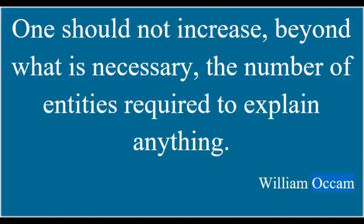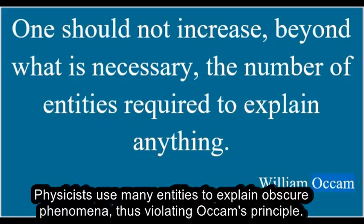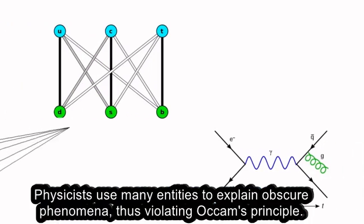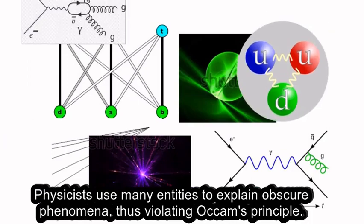Occam's Principle says one should not increase, beyond what is necessary, the number of entities required to explain anything. Physicists use many entities to explain obscure phenomena, thus violating Occam's Principle.